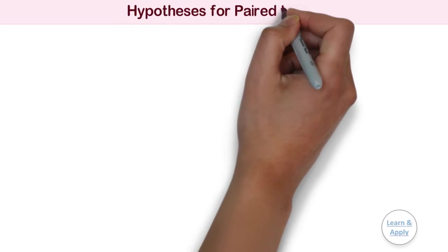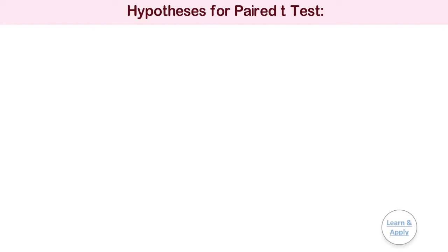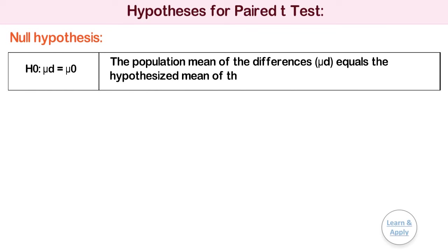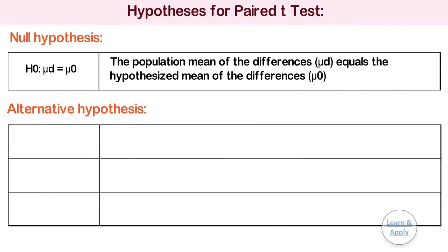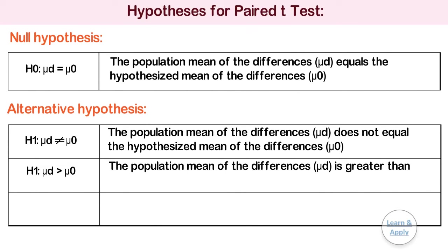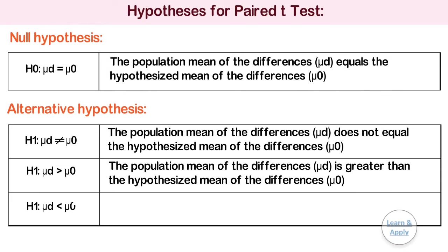For the paired t-test, the hypotheses are as follows. Null hypothesis H0: mu_d equals mu_0, i.e. the population mean of differences mu_d equals the hypothesized mean of differences mu_0. And the alternative hypothesis — select one of the following: H1: mu_d is not equal to mu_0, i.e. the population mean of differences mu_d does not equal the hypothesized mean of differences mu_0; or H1: mu_d is greater than mu_0; or H1: mu_d is less than mu_0.